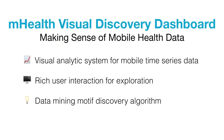To help with this discovery we have what we call a data mining motif discovery algorithm. This is based on a well-known algorithm called SAX, and it essentially turns time series data into symbols. A simple way to think about it is that you quantize the signals into fewer levels, so you don't need to deal with all the continuous subtle value changes and can look at the data at a higher level. We aim to provide all these functionalities through the Discovery Dashboard.